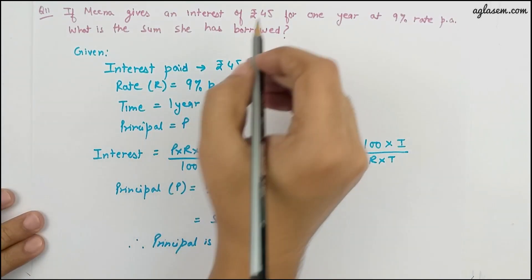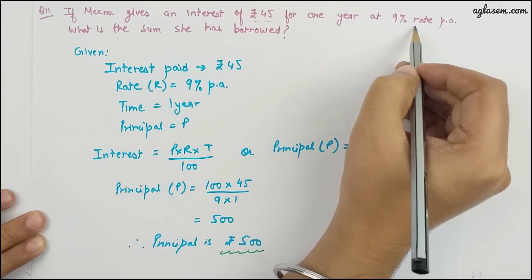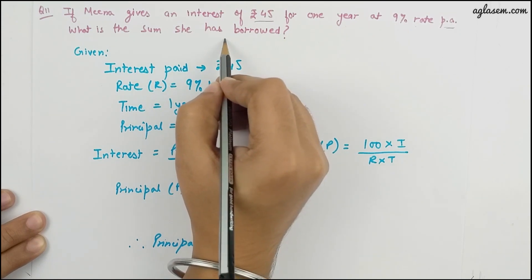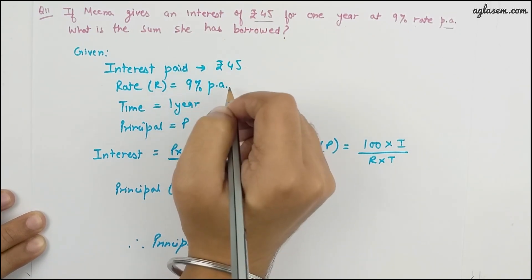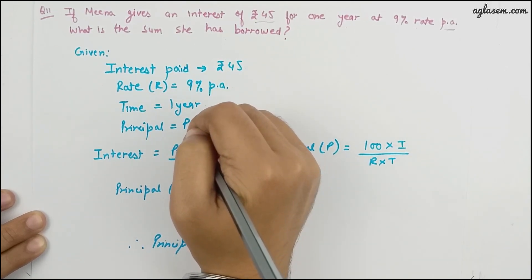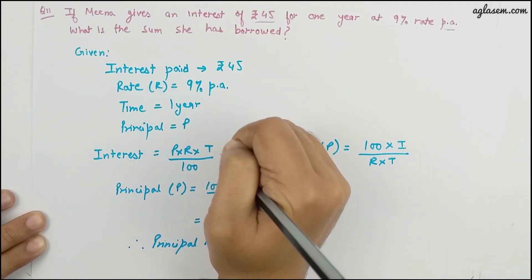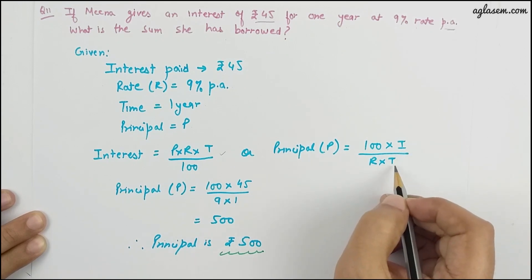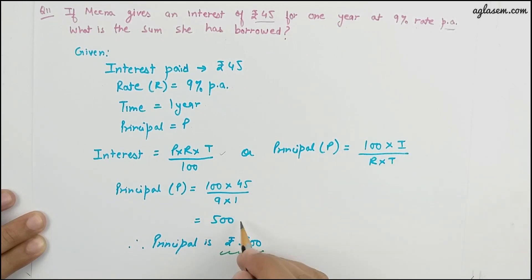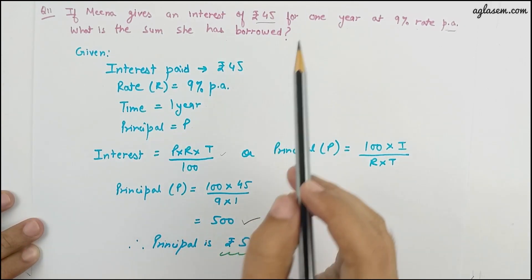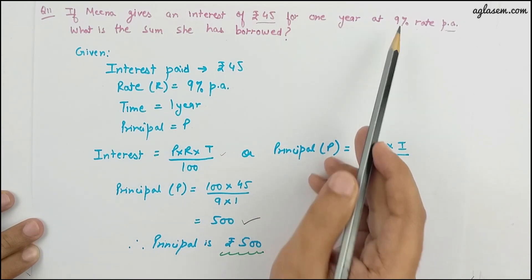Question 11: if Meena pays interest of 45 rupees for one year at 9 percent per annum, what is the sum she borrowed? Interest, rate, and time are given but principal is unknown. Using the formula: principal equals 100 into Interest divided by Rate into Time. Substituting the values, principal comes to 500 rupees.